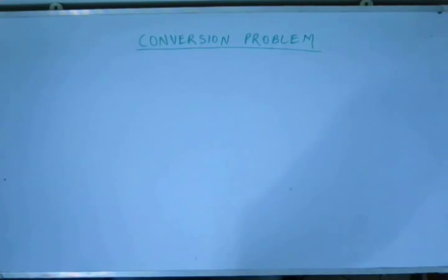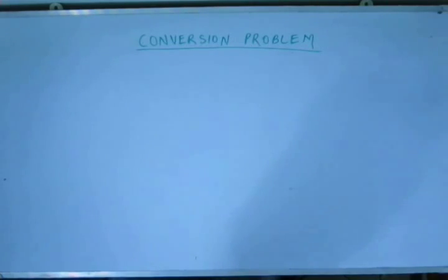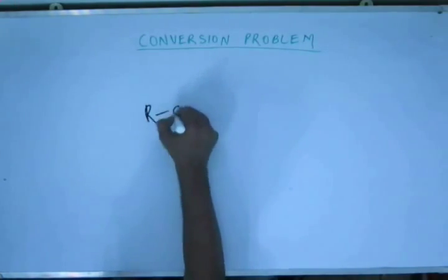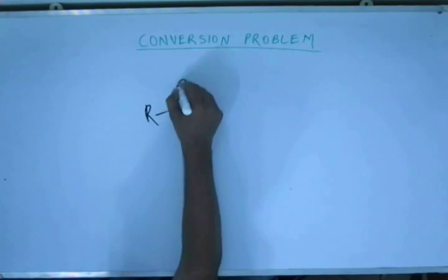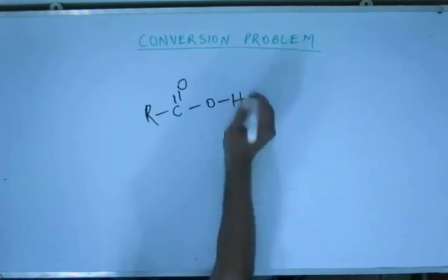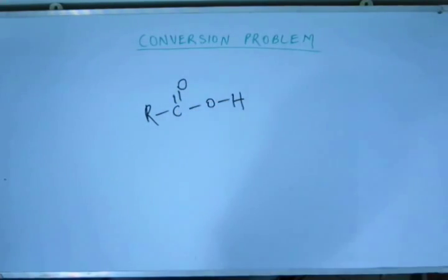Let me introduce this chapter to you. In this chapter, we will study about carboxylic acids, which you have known for many years. Carboxylic acids look like this — the R group can be aliphatic, aromatic, or whatever.